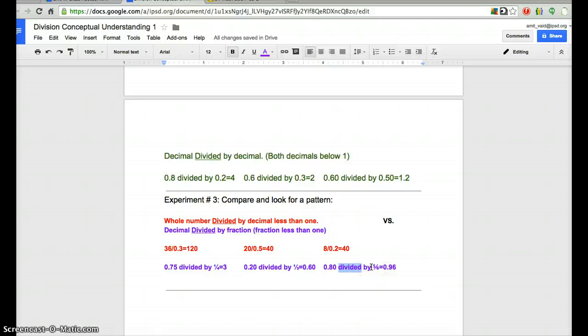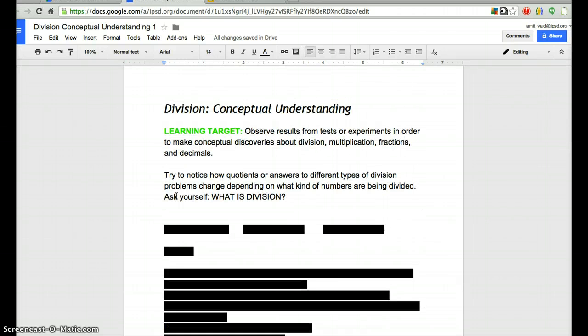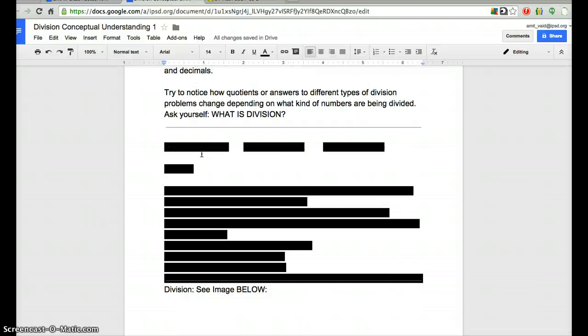So, to wrap up, these are 3 experiments that I've done. And from them, I urge you to try to look for patterns, try to draw conclusions from what you see as evidence on the screen. You can conduct your own experiments. These are only 3 experiments that I've done. There's many other things that you can test out. And the goal for you is to ultimately have a conceptual understanding of division, multiplication, fractions, and decimals through your discovery of the evidence. I'm going to provide some instruction on general multiplication and division in the near future and in class.